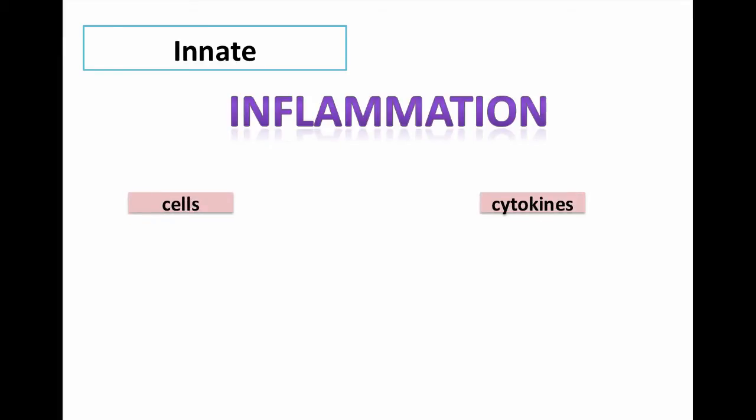Inflammation will call certain cells and cytokines into action. The cells are white blood cells like monocytes which are called macrophages in the tissue, neutrophils which act in acute bacterial infections, eosinophils which act in allergies and parasitic infections, and natural killers which kill tumor cells and viruses.